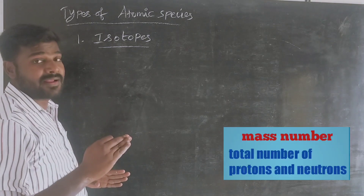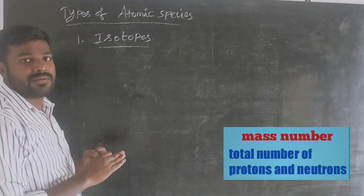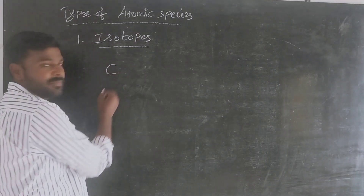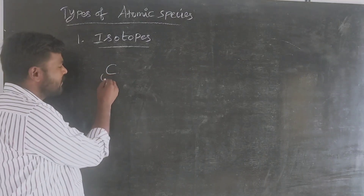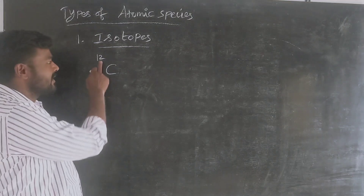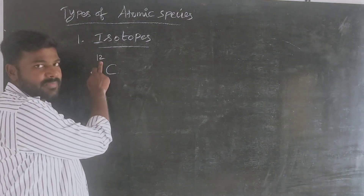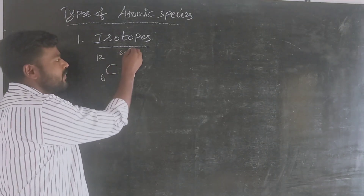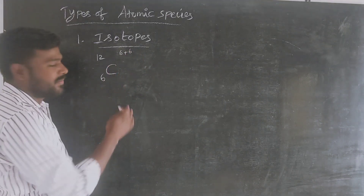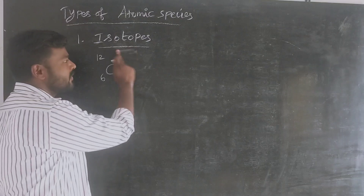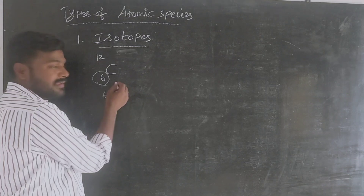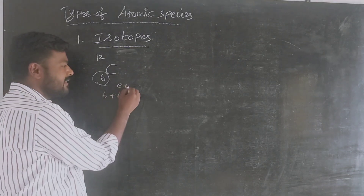The mass number is different because the proton and neutron total counts differ. For example, if you look at carbon with atomic number 6 and mass number 12: carbon has 6 protons and 6 neutrons. So 6 plus 6 equals 12.